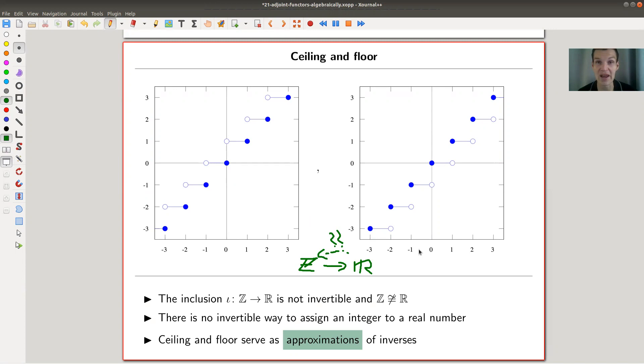So going from left to right, you just include, just set zero to zero, one to one and so on. But going the other way around is not so easy. There's no really good function from the real numbers to the integers.